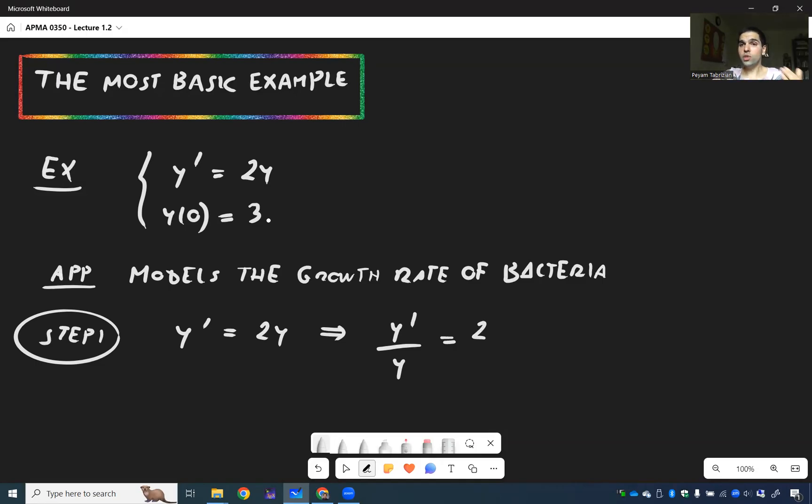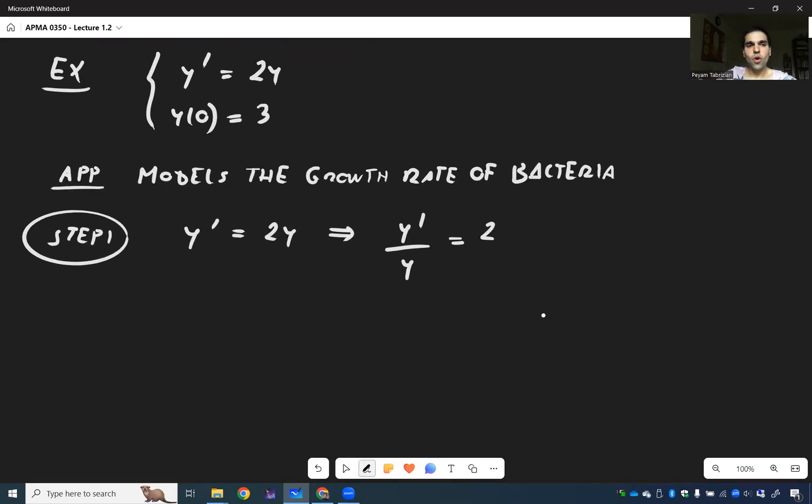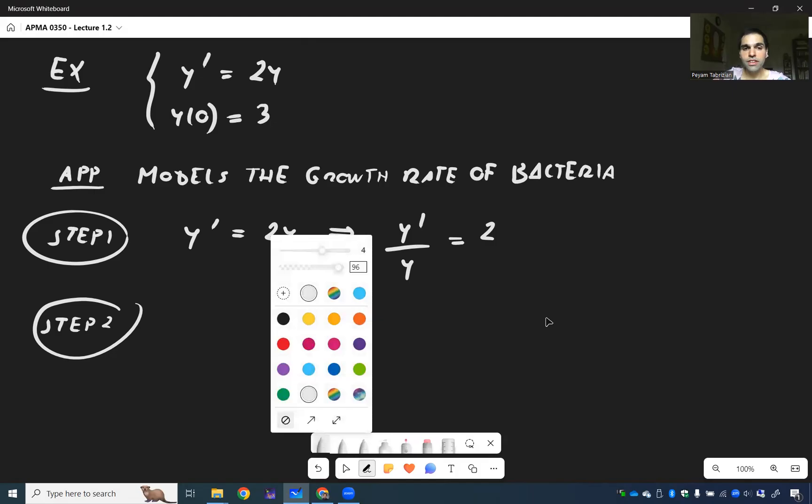And then it turns out the left-hand side is a hidden derivative. So it's a derivative of a certain function. So if you think, let's say, 1 over x, which function has derivative of 1 over x, then hopefully ln comes to mind. So ln derivative. And in fact, the left-hand side is just the derivative of ln of y.